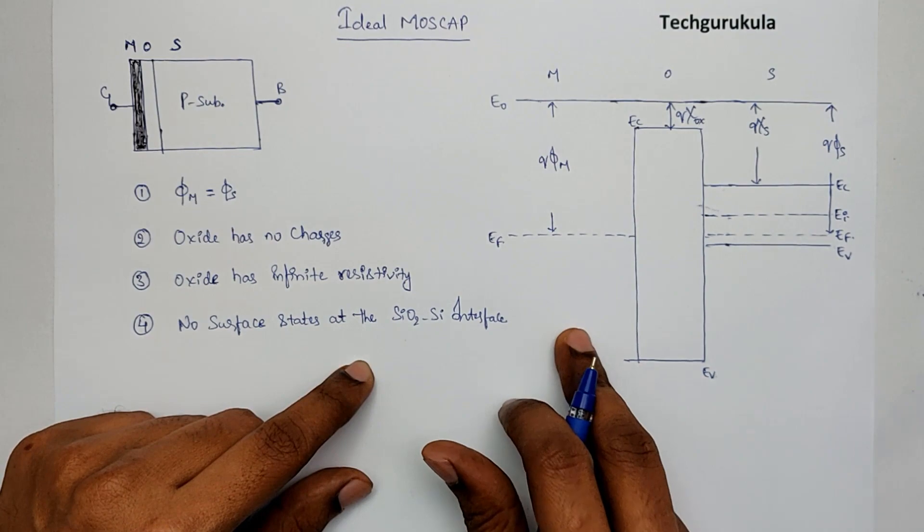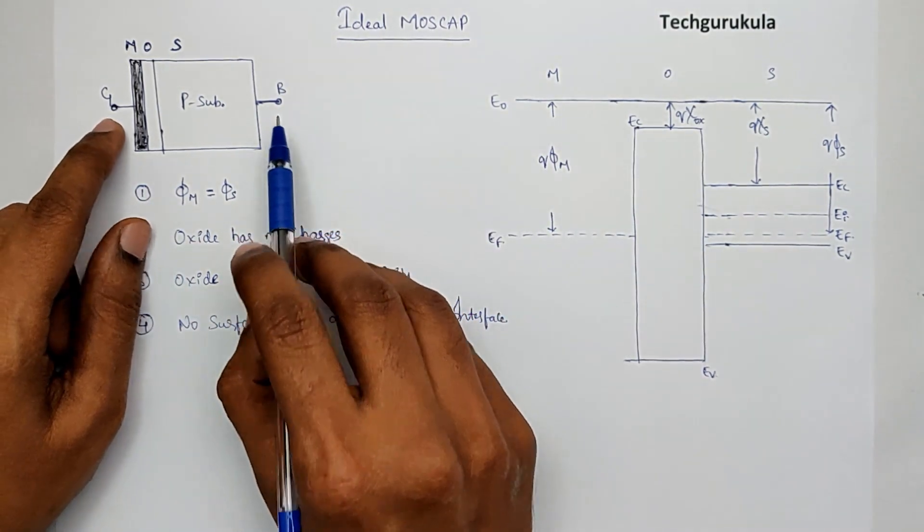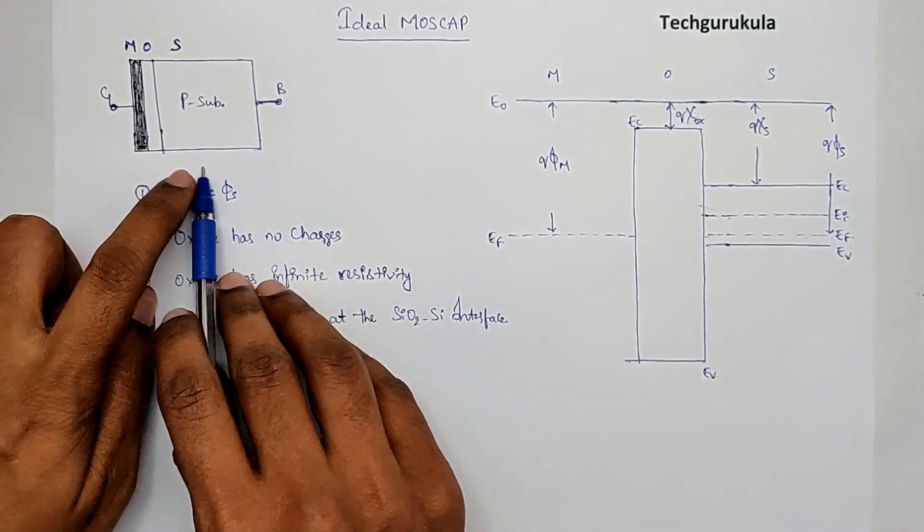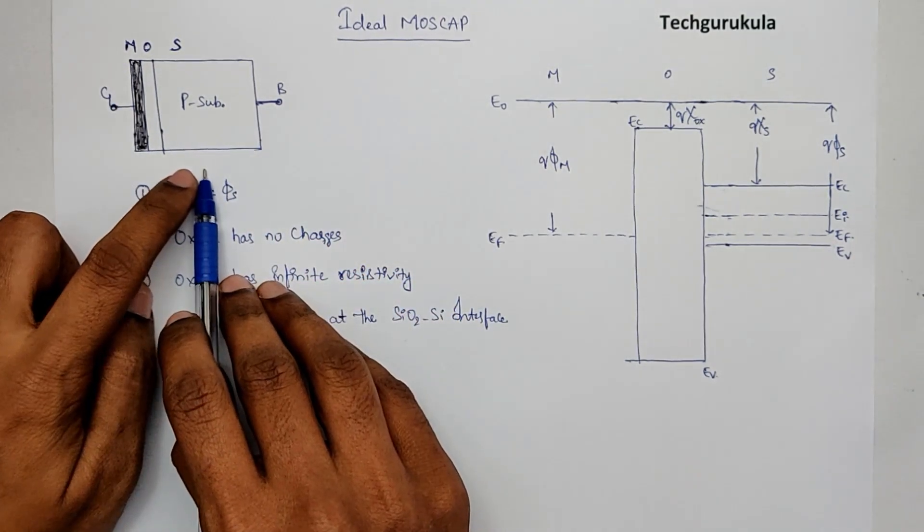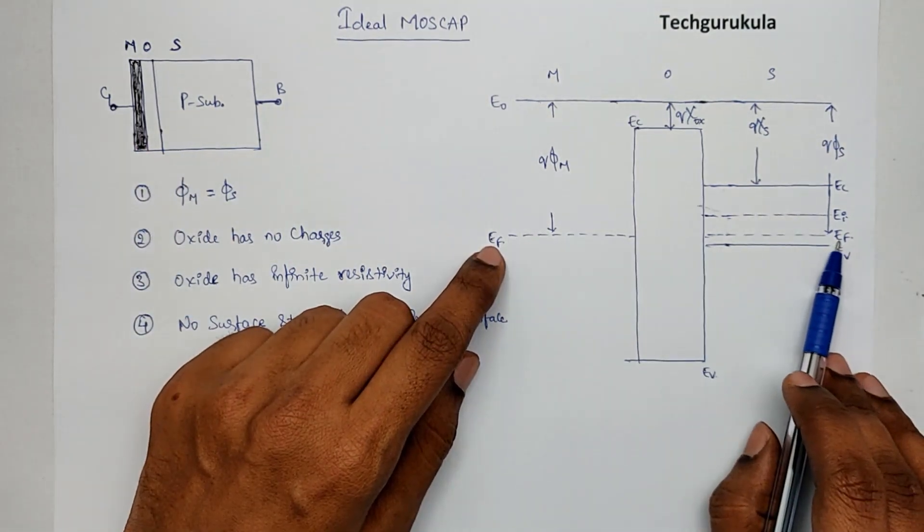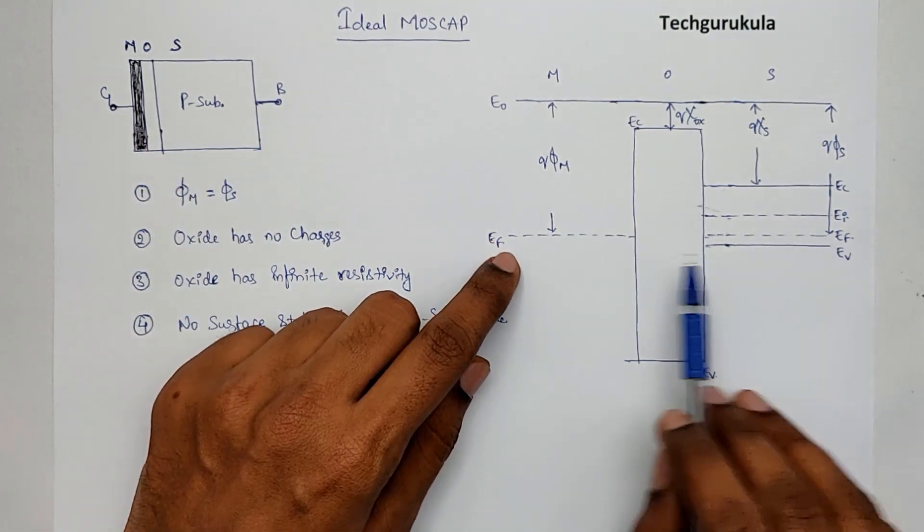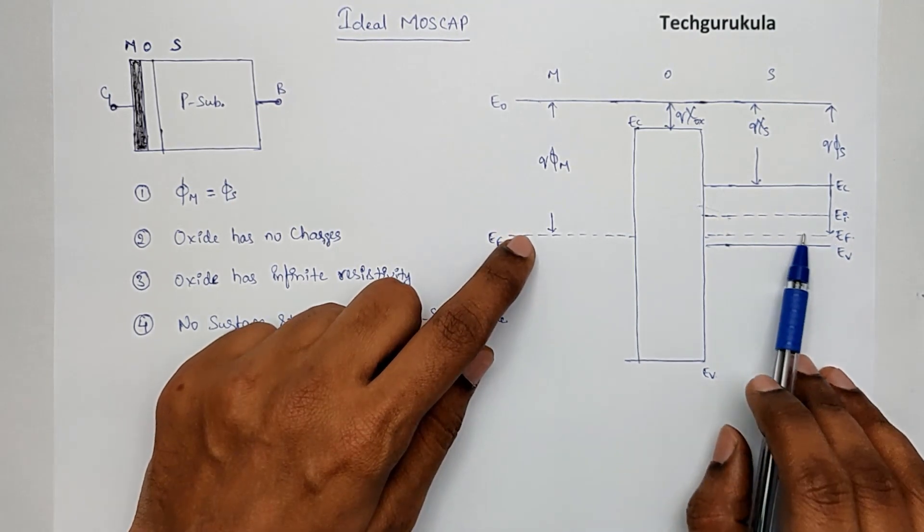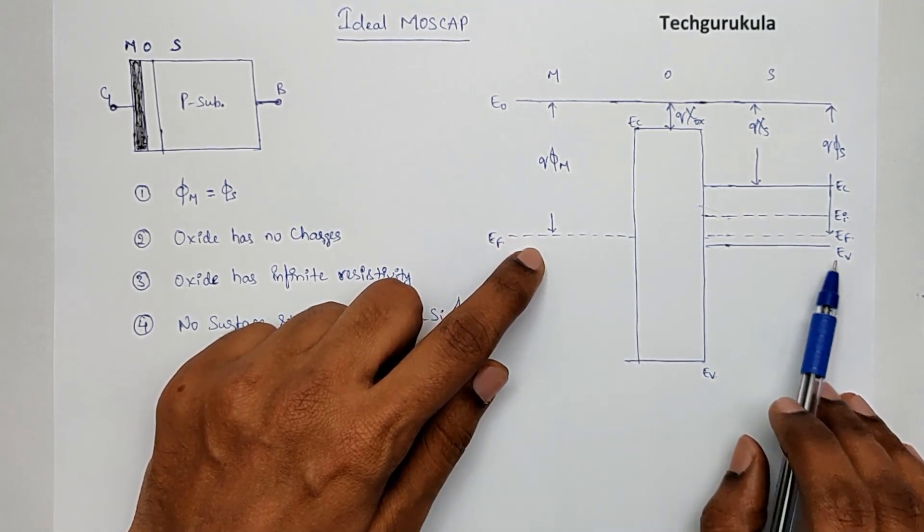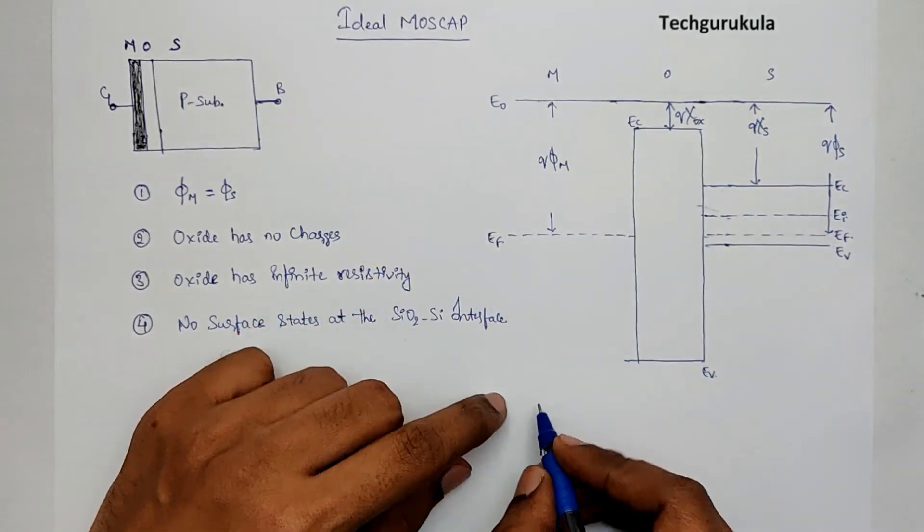Now, if you observe here, this MOS cap is at equilibrium. Now, if we take both the terminals and actually short them, nothing is going to happen because both of them are at same potential. Right? EF and EF are at same value. So, there is nothing that has to be done to actually transfer charges from outside.